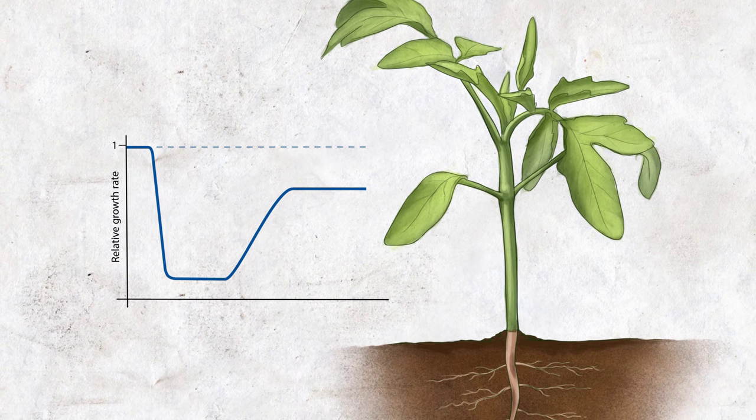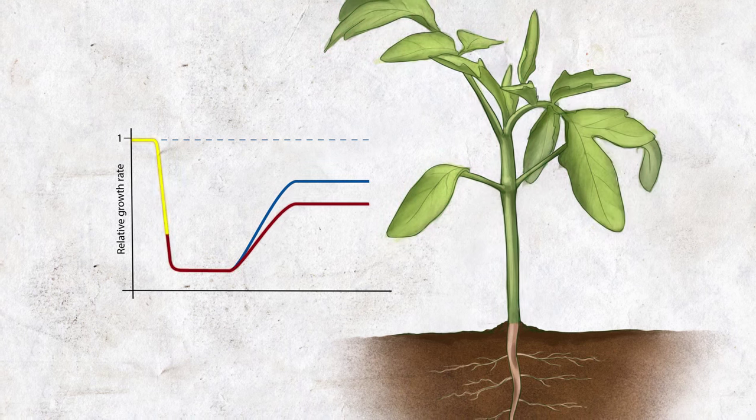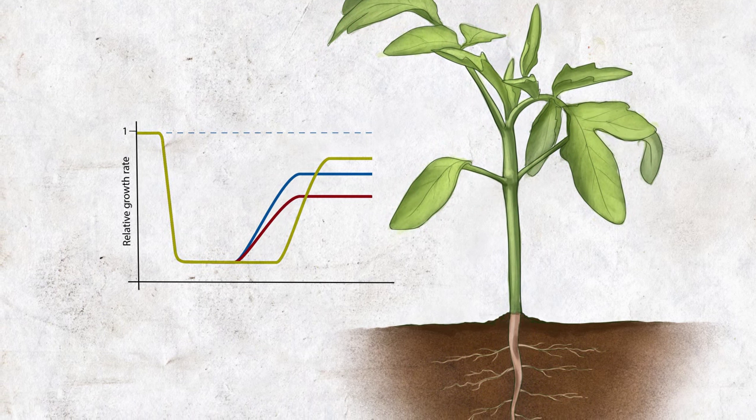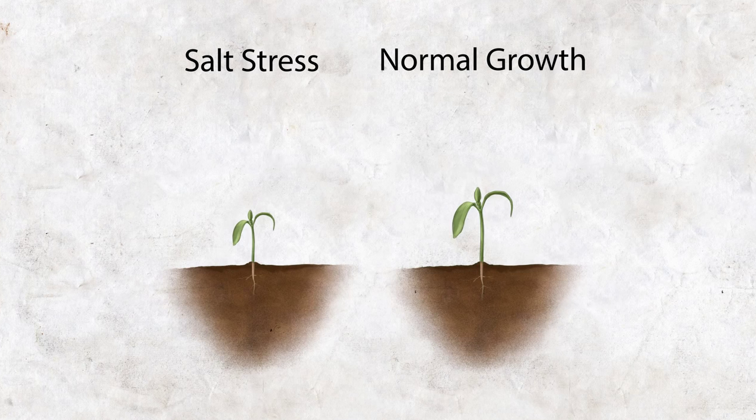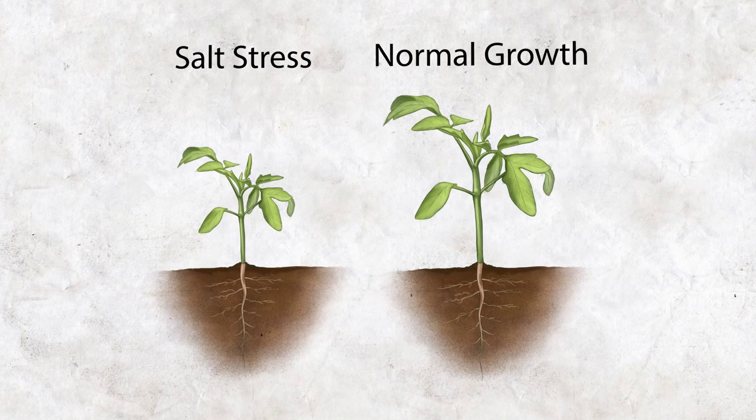Interestingly growth of individual plant organs is affected to different degrees by salt stress. So if we would compare salt stress plants to normal grown plants they show a different architecture.